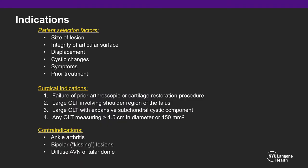When evaluating patients for this surgical procedure, patient selection should include an evaluation of lesion size, the articular surface integrity, fragment displacement, the presence of cystic changes, the patient's symptoms, and any prior treatment. Our surgical indications include failure of a prior arthroscopic or cartilage restoration procedure, large osteochondral lesions involving the shoulder of the talus, large osteochondral lesions with expansive subchondral cysts, and any OLT measuring greater than 1.5 cm in diameter.